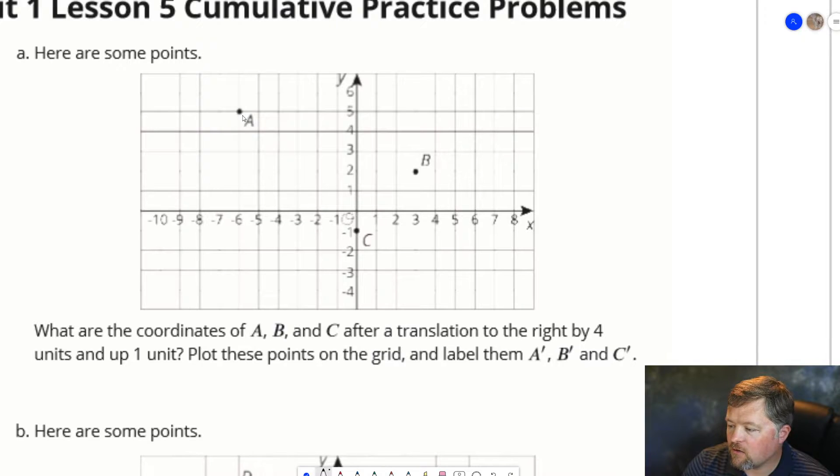A', we go 4 units right and 1 up. 1, 2, 3, 4, and 1 unit up. A' B, 1, 2, 3, 4, and 1 unit up. B', C, 1, 2, 3, 4 units right, 1 unit up. C', they all went 4 units to the right, 1 unit up.